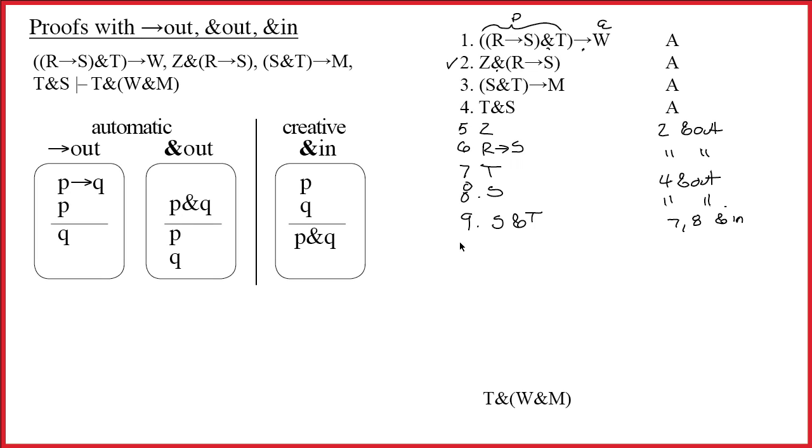It is so that we could do the arrow out. And now I need my pencil to work again. Okay. And when I do the arrow out, I say S and T gives me M. I have S and T, so I get M. It will be three, nine, arrow out.